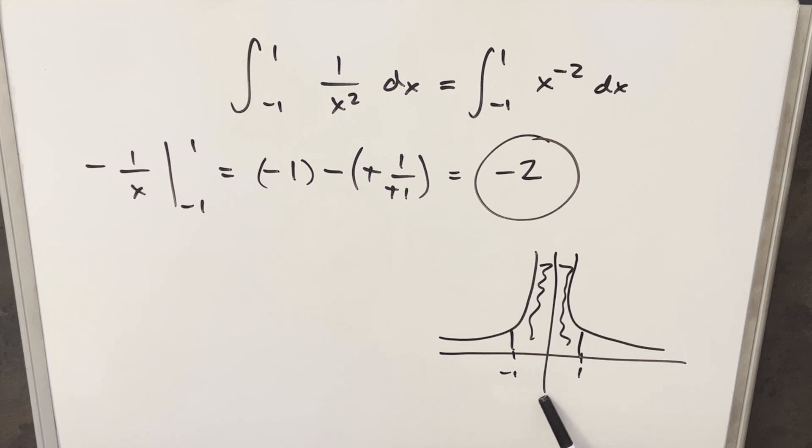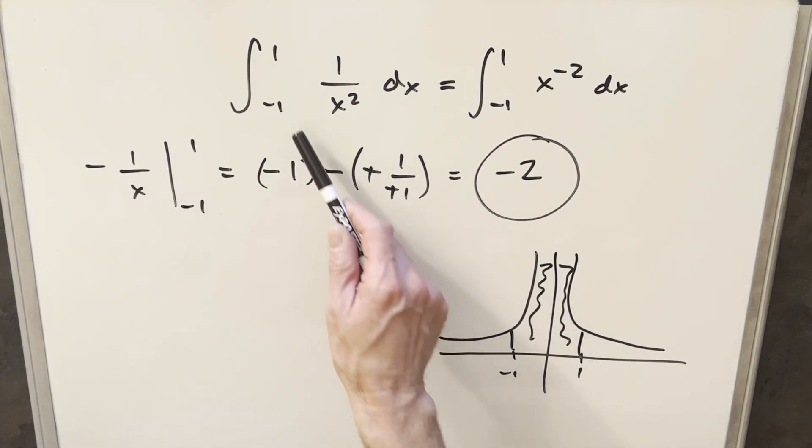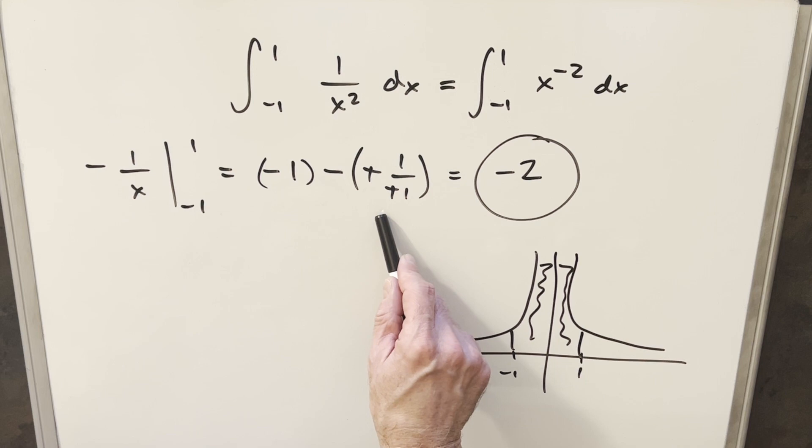Well, it turns out the problem here is at 0, you'll notice we're dividing by 0 if you plug a 0 in there. And so this curve is actually not continuous on this interval from minus 1 to 1. So we can't just go ahead and do the integral the straightforward way.